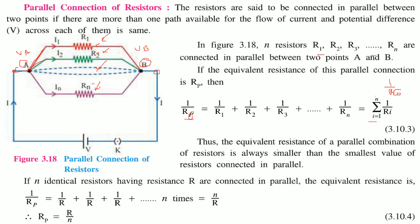The equivalent resistance of a parallel combination is always smaller than the smallest individual resistor. If n identical resistors of resistance R are connected in parallel, 1/Rp equals n/R, so taking the reciprocal, Rp equals R/n.